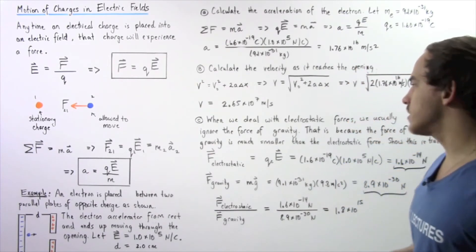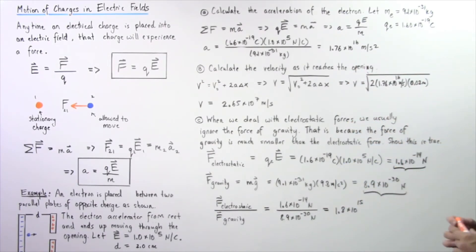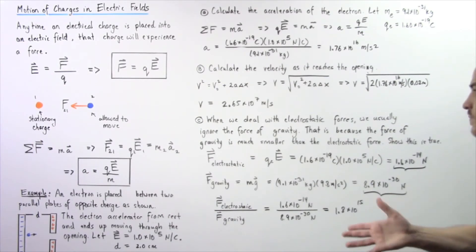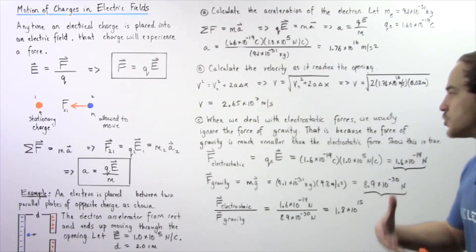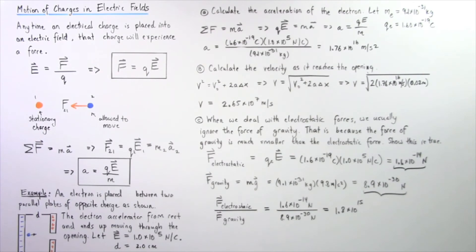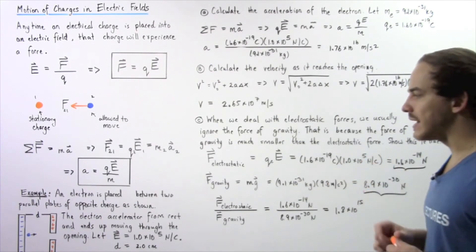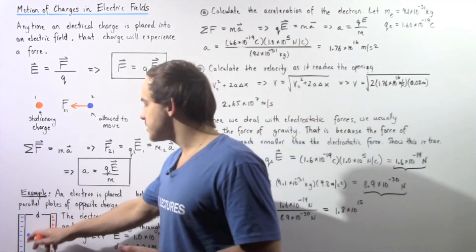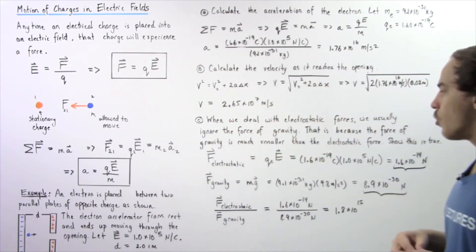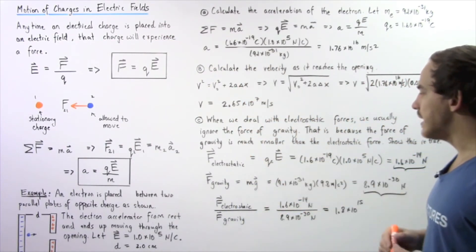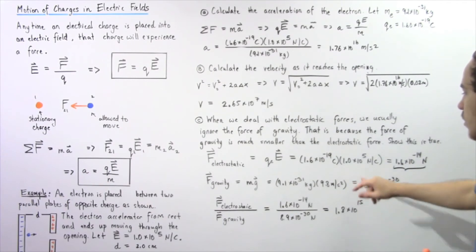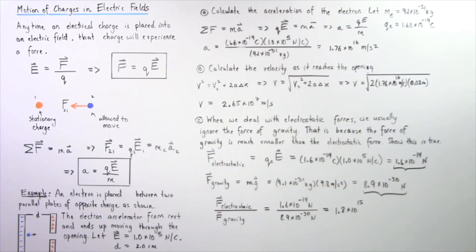For Part C, when dealing with electrostatic forces we usually ignore the force of gravity, because the gravitational force is typically much smaller than the electrostatic force. We need to show this is true here. The electrostatic force acting on the electron is the product of its charge and the electric field: F_e = qE = 1.6×10⁻¹⁹ C × 1×10⁵ N/C ≈ 1.6×10⁻¹⁴ N.